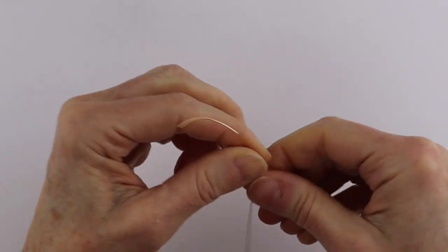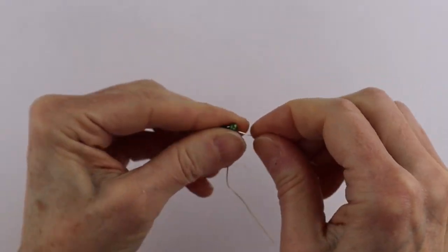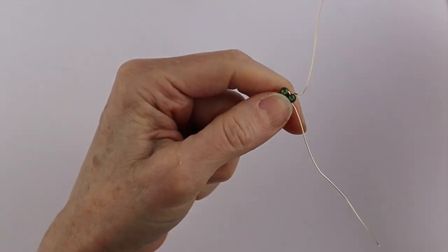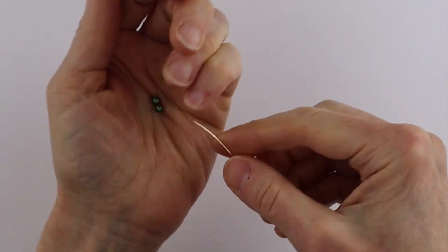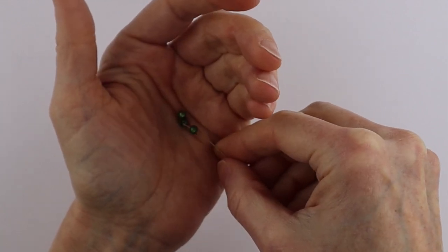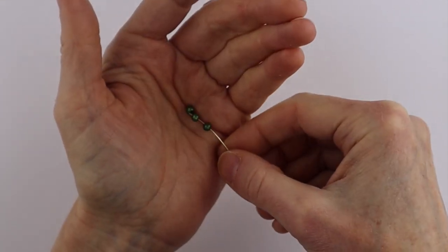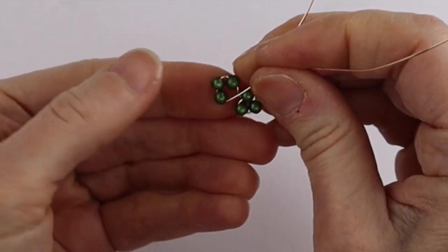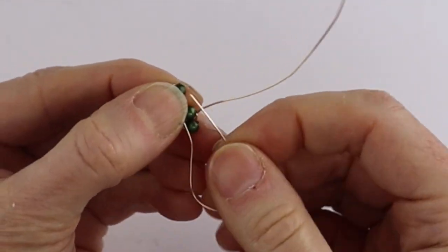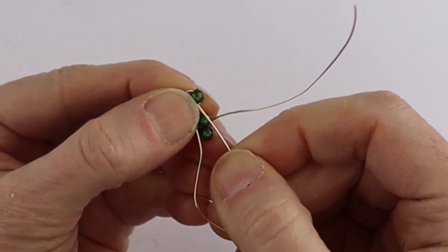So from there we want to do our next round. Just bend it up about a quarter inch away from the edge, maybe a little bit less, and then we're going to stick three more beads on there. We're going to make our little triangle here and then we're going to put this one through here.